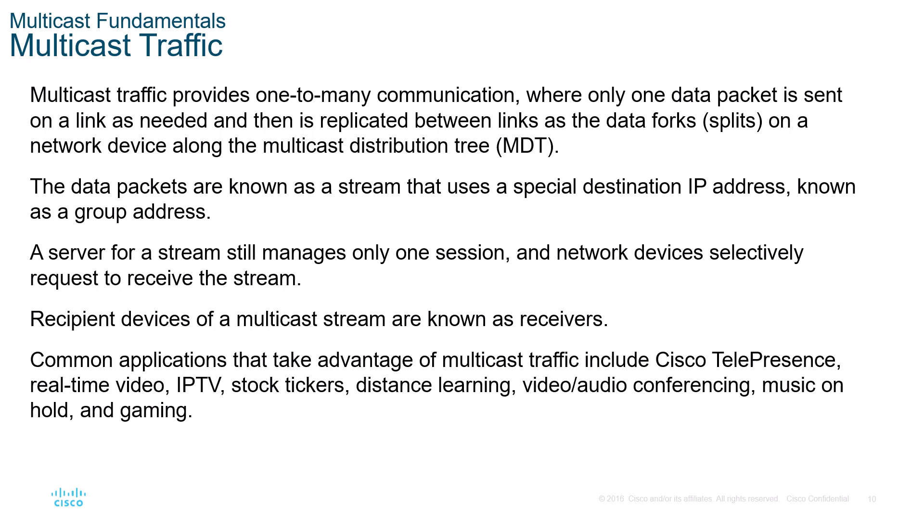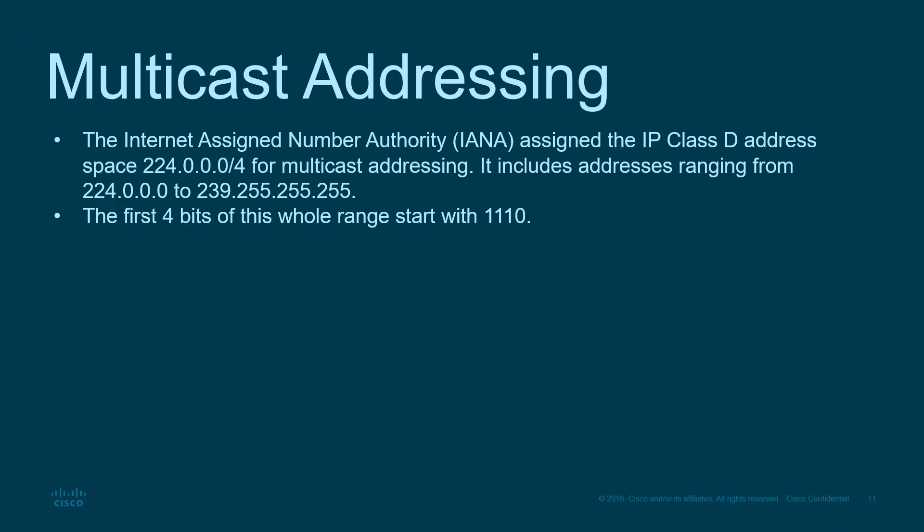What are multicast-based addresses? If you remember your Class A, B, C, D addresses — Class D is the one you normally don't touch. That is the 224.0.0.0/4 range: 224.0.0.0 through 239.255.255.255. The first four bits — 1110 — give us this giant range of addresses set aside for multicast addressing for IPv4. IPv6 multicast addressing exists but is beyond the scope of this module.